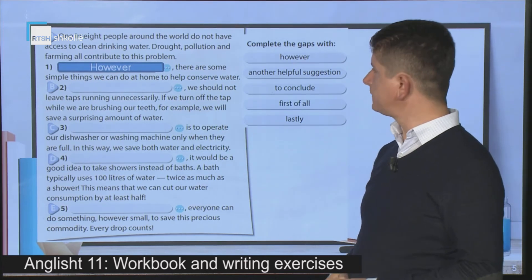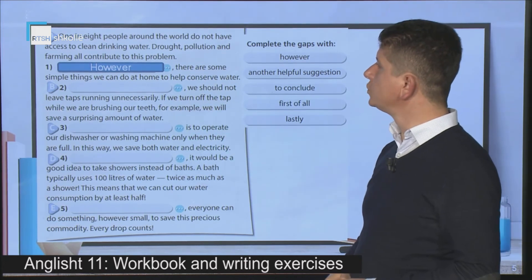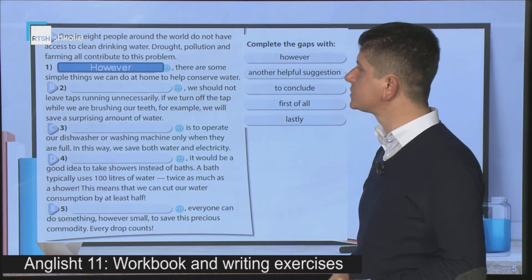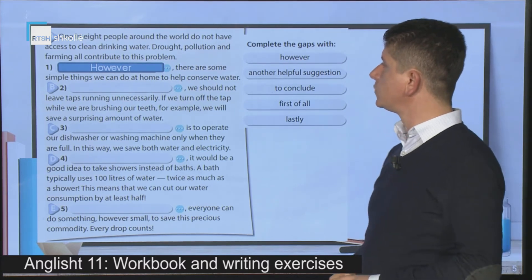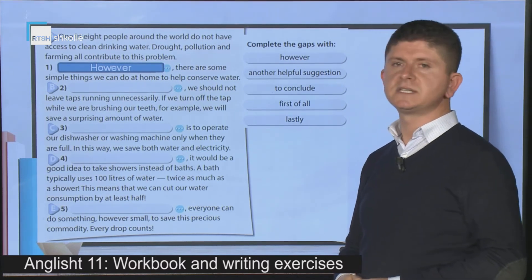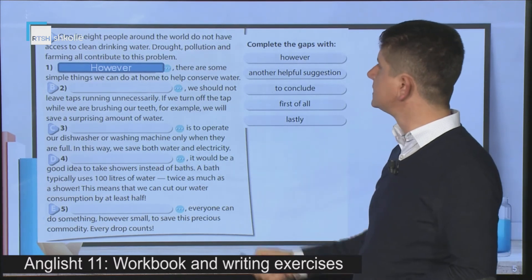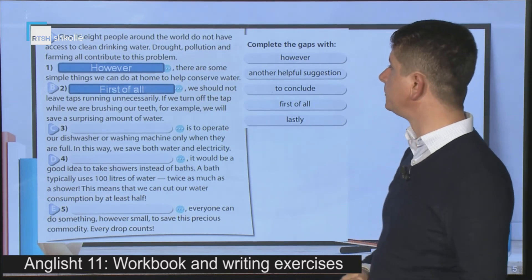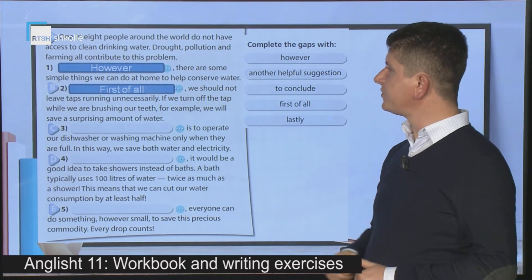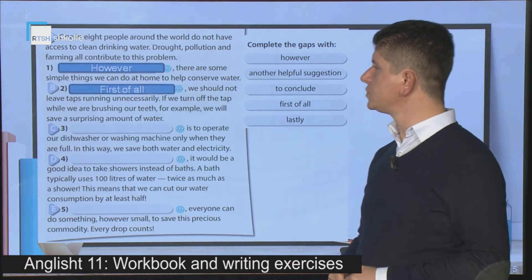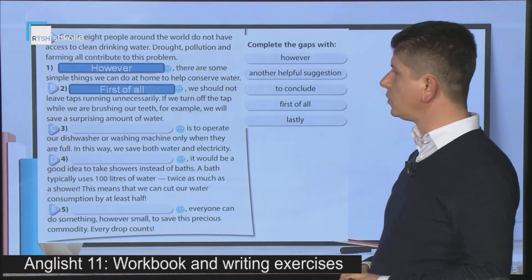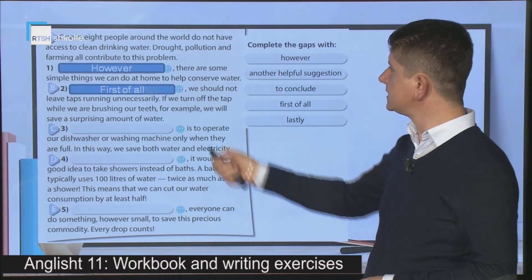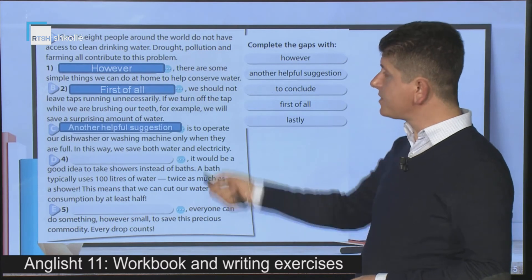Let's pass to the second paragraph. We should not leave taps running unnecessarily. If we turn off the taps while we are brushing our teeth, for example, we will save a surprising amount of water. This is the first suggestion, so here we use 'first of all' because it's giving the first suggestion to the problem. The second suggestion is to operate our dishwasher or washing machine only when they are full. In this way we save both water and electricity.